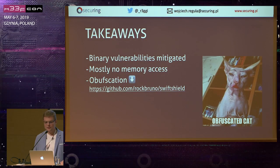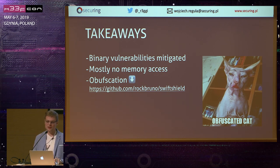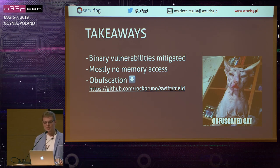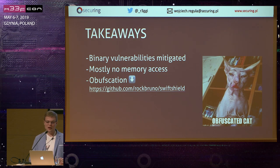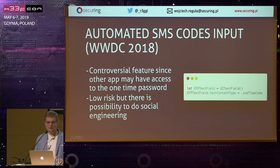The takeaways from this module: Swift protects your application against basic binary vulnerabilities. Swift enforces deliberate usage of insecure methods like `UnsafePointer`. There is no obfuscation — if you don't want someone to reverse engineer your application, you can use an obfuscator like SwiftShield, which is free and open source. Kudos to Rock Bruno for building it.